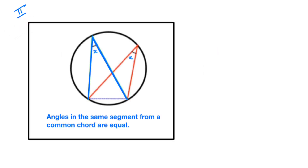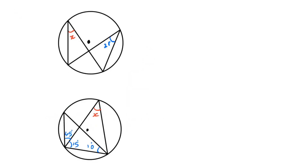The second theorem: angles in the same segment from a common chord are equal. So this is a chord, and if two angles are drawn from the chord and they both touch the circumference, they are equal. Let's solve a few examples. This angle here is 21 and we are supposed to find x. x is equal to 21 degrees, and the reason is angles in the same segment from the same chord are equal.